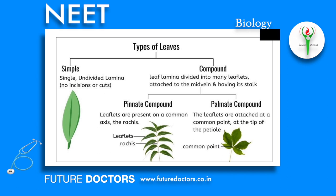Compound leaves are divided into two types: pinnately compound leaves and palmately compound leaves. In pinnately compound leaves, the incision of the lamina is directed towards the midrib, known as the rachis. Leaflets are arranged on both sides of the rachis — example: Neem. In palmately compound leaves, the leaflets are arranged at or attached at a common point at the tip of the petiole — example: Silk Cotton.